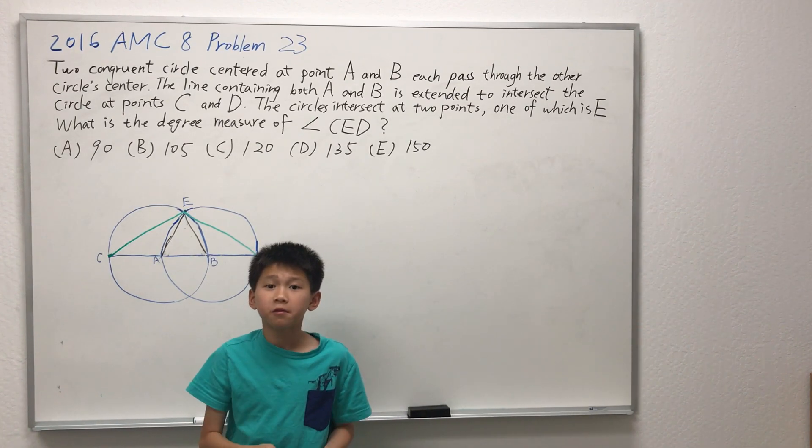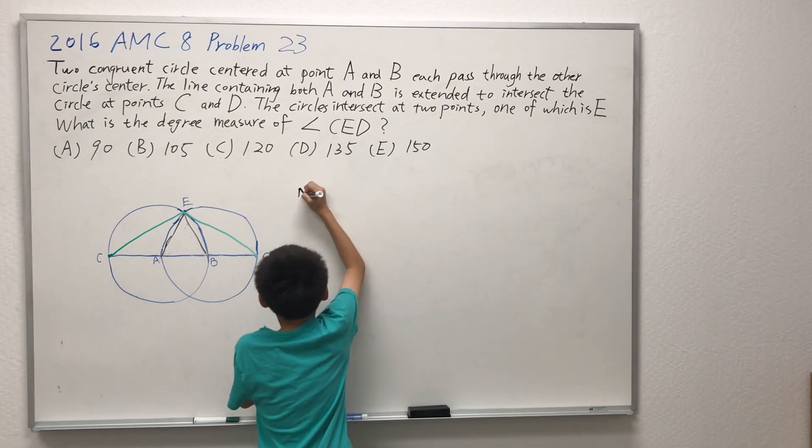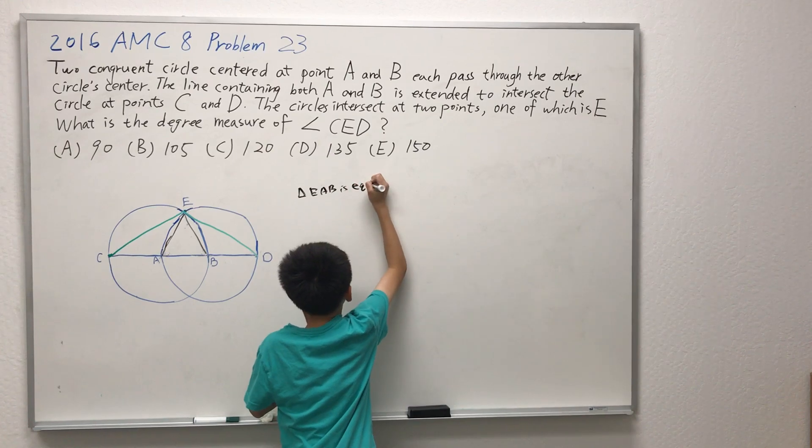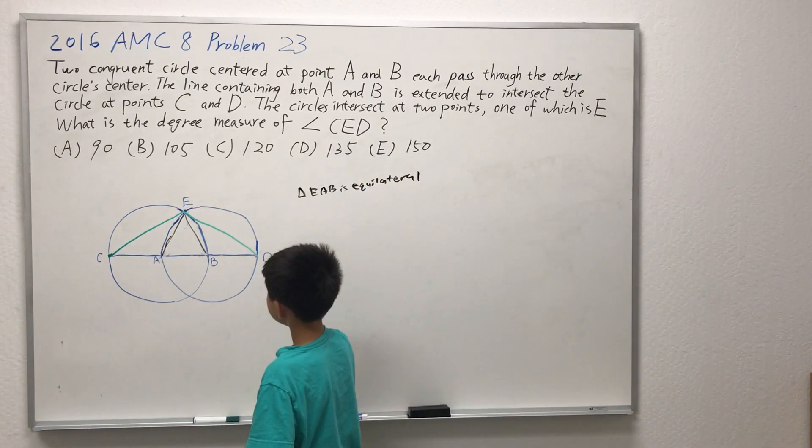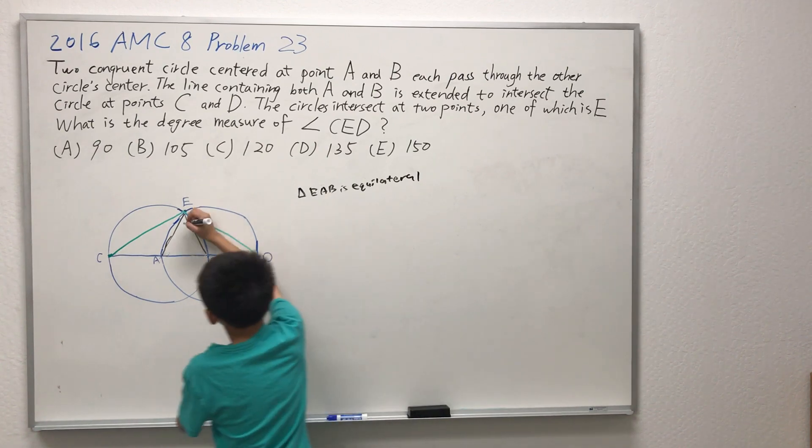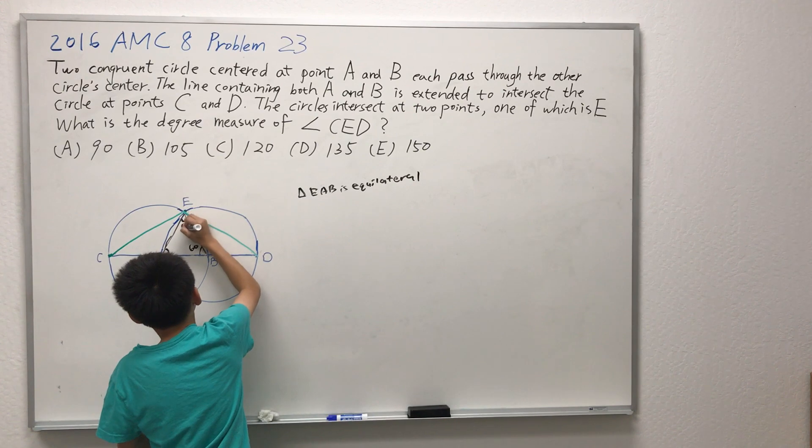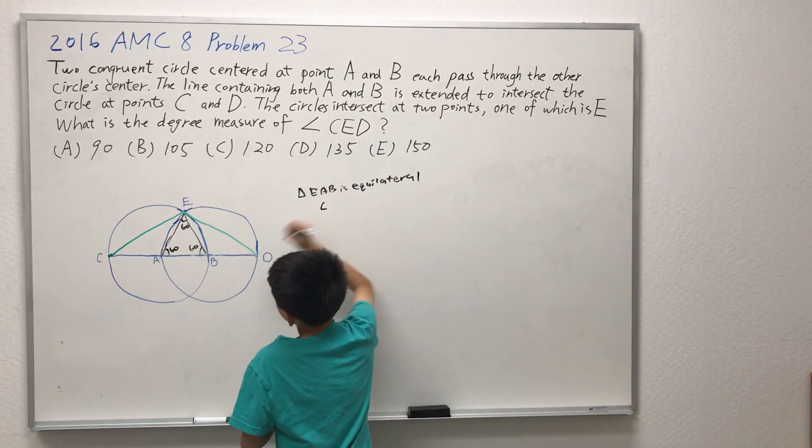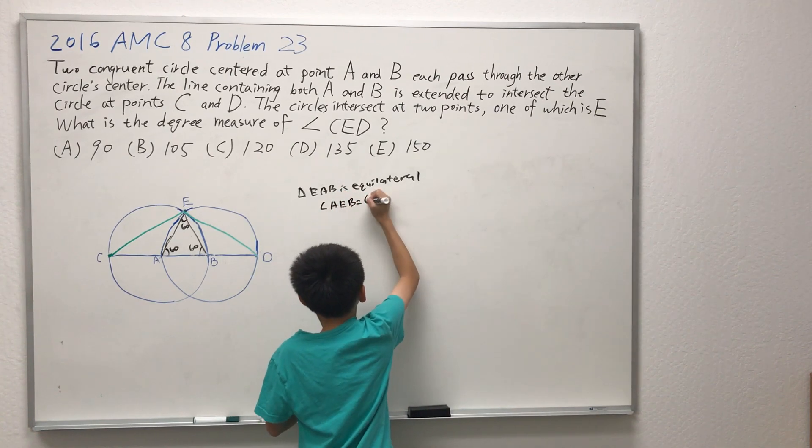So triangle AEB is equilateral, which means that all three angles are 60 degrees. Angle AEB is equal to 60 degrees.